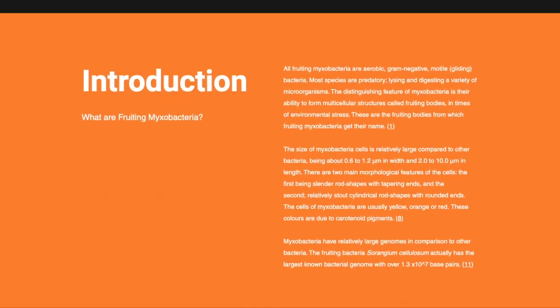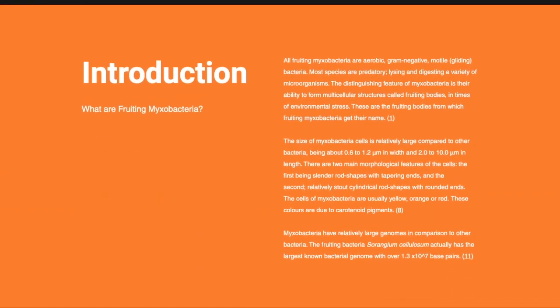All fruiting bacteria are aerobic, gram-negative and motile, meaning they glide. The majority of species predate on a variety of microorganisms and insoluble nutrients found in decomposing soils. Myxobacteria are able to form fruiting bodies in times of environmental stress, which is where they get their name from.